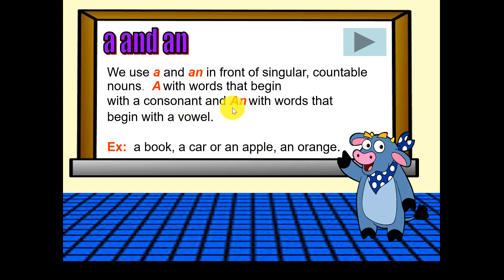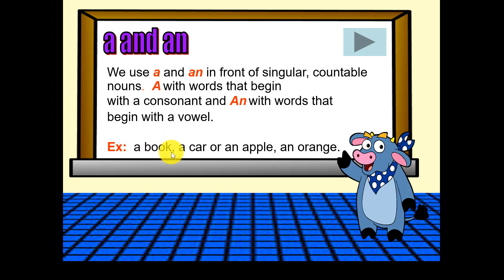But we use 'an' with words that begin with a vowel. So for example, apple — A, E, I, O, U — orange begins with O, so we put 'an', not 'a'. But for book and car, those begin with consonants, so we use 'a'. If it's a consonant, we use 'a'.